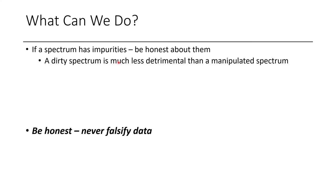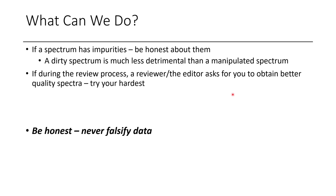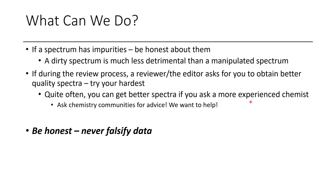What can we do as researchers? If a spectrum has impurities, be honest about them — don't hide them. A dirty spectrum is much less detrimental to your career and to the integrity of science than a manipulated spectrum. During the review process, if reviewers or the editor ask you to obtain better spectra, try your hardest. Sometimes you have unstable material that you can't purify — I've had stuff that just keeps decomposing and you can't get a better quality spectrum, and it's unreasonable to expect magic. But a lot of the time it is possible, so you need to try more than once. Ask a more experienced chemist — a senior postdoc, a senior PhD student, or even chemistry communities like the Discord — they're usually willing to help and want to make science better.